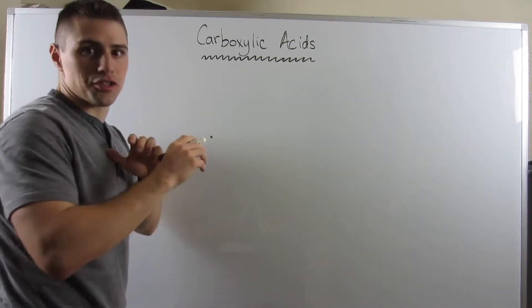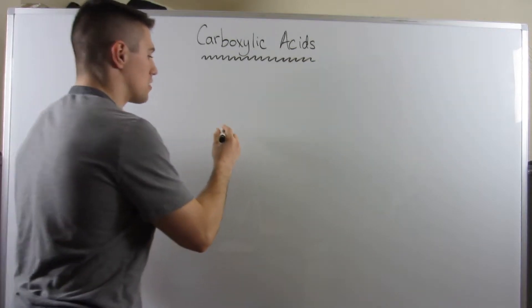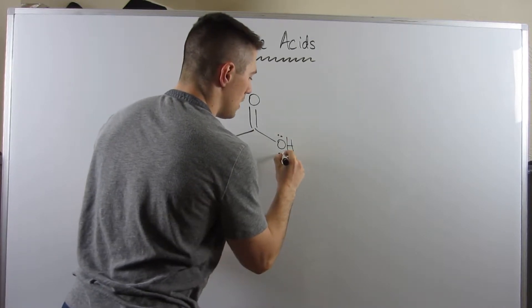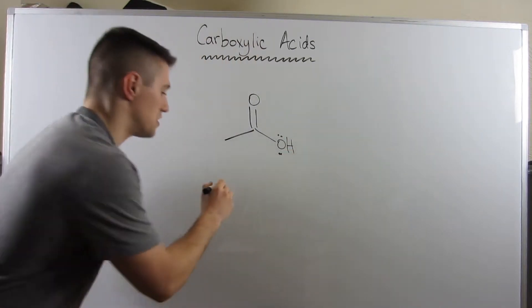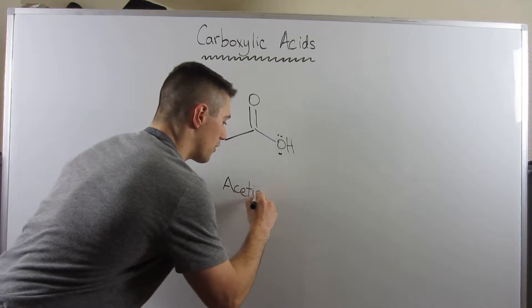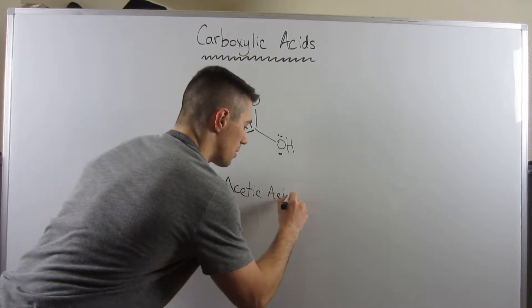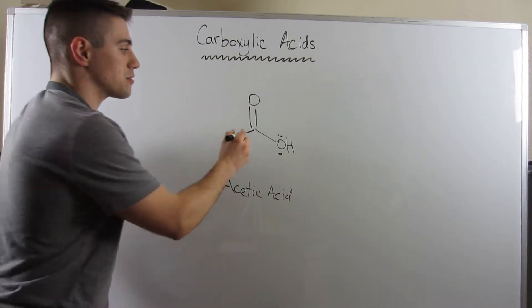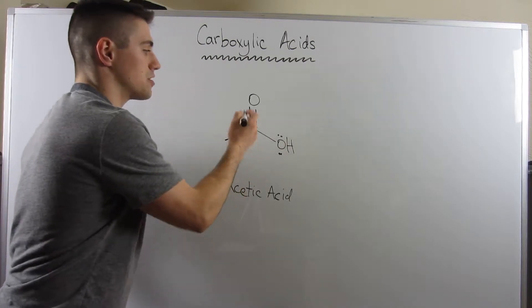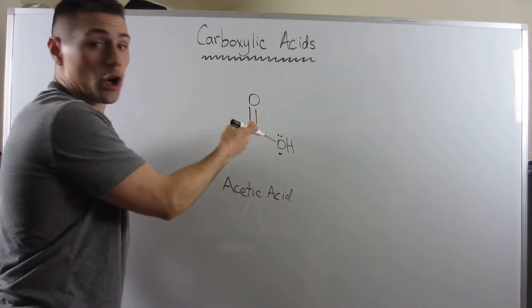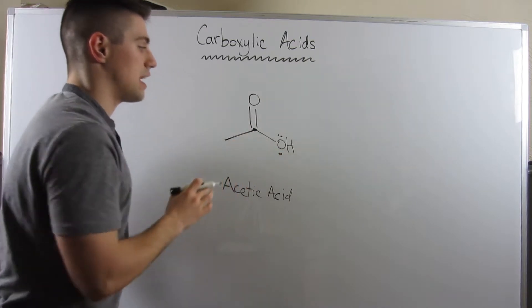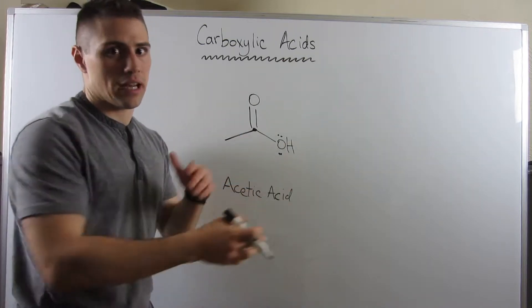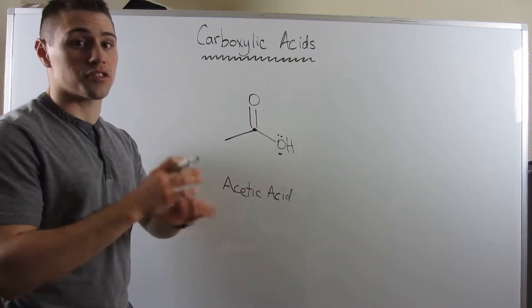I'm going to draw a generic carboxylic acid — let's look at this 2-carbon carboxylic acid. This is acetic acid, right? We've seen it a bunch of times; you've probably heard this name in gen chem. Carboxylic acids are characterized by a carbon double-bonded to oxygen — a carbonyl — and an OH at the end. They have to be terminal, meaning at the end of a chain. You can't have a carboxylic acid in the middle of a carbon chain.